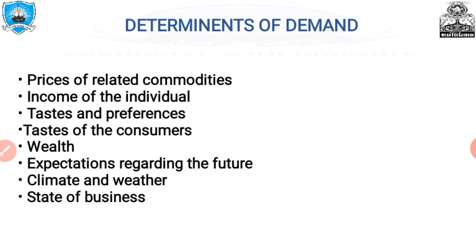The second determinant is the income of the individual. The amount demanded of a commodity also depends upon the income of an individual. When there is an increase in income, the individual increases the amount of most commodities in his consumption bundle. If my income rises, I will consume more goods. If I have 500 rupees I will purchase 500 rupees worth of goods; if I have 1000 rupees I will purchase more. Whenever income increases, the consumption bundle is going to increase, though the extent of increase may differ between commodities.